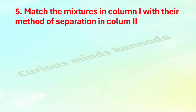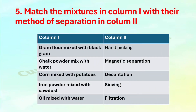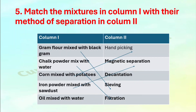Fifth question: Match the mixtures in column 1 with their method of separation in column 2. Gram flour mixed with black gram — sieving. Chalk powder mixed with water — filtration. Corn mixed with potatoes — hand picking. Iron powder mixed with sawdust — magnetic separation. Oil mixed with water — decantation.